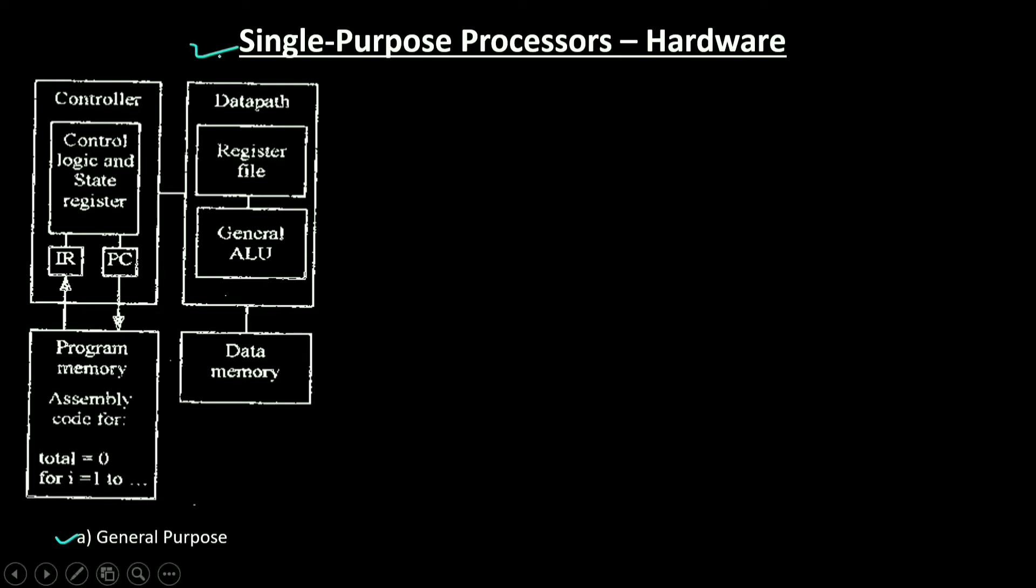When we come upon a single-purpose processor, that is hardware, a single-purpose processor is a digital circuit designed to execute exactly one program. For example, consider the digital camera which I had shown in my first lecture. All of the components other than the microcontroller are single-purpose processors. For example, the JPEG codec executes a single program that compresses and decompresses video frames. An embedded system designer may create a single-purpose processor by designing a custom digital circuit. Alternatively, the designer may purchase a pre-designed single-purpose processor. Many people refer to this part of implementation simply as the hardware portion, although even software requires a hardware processor on which to run the program.